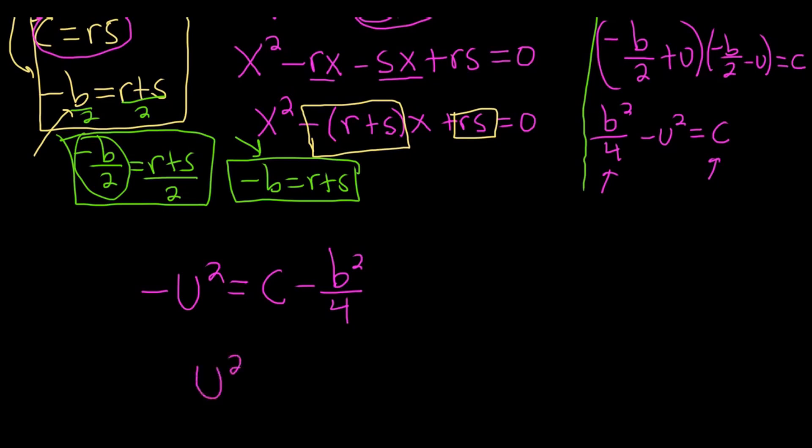Multiply by negative 1, so we get u² equals, we're going to flip the signs now. So b²/4 - c. Take the square root.